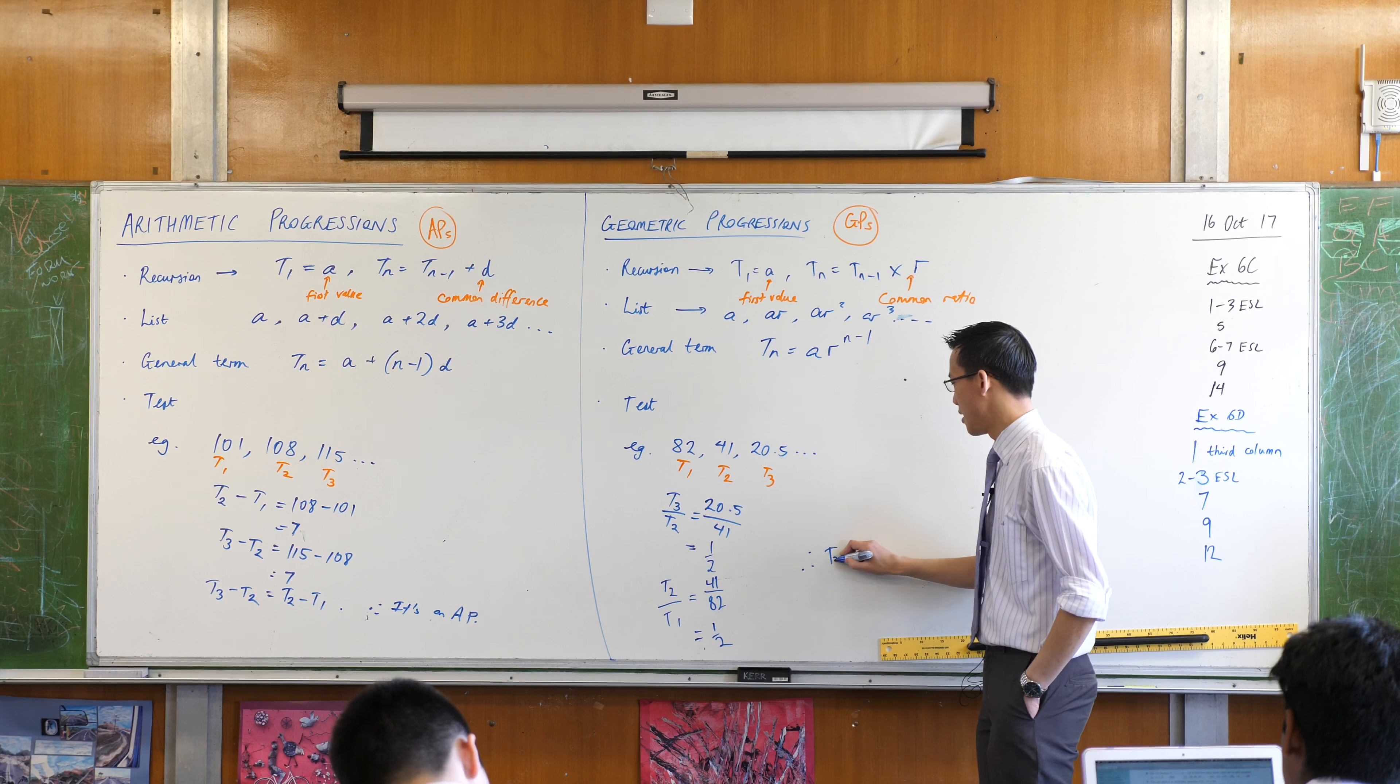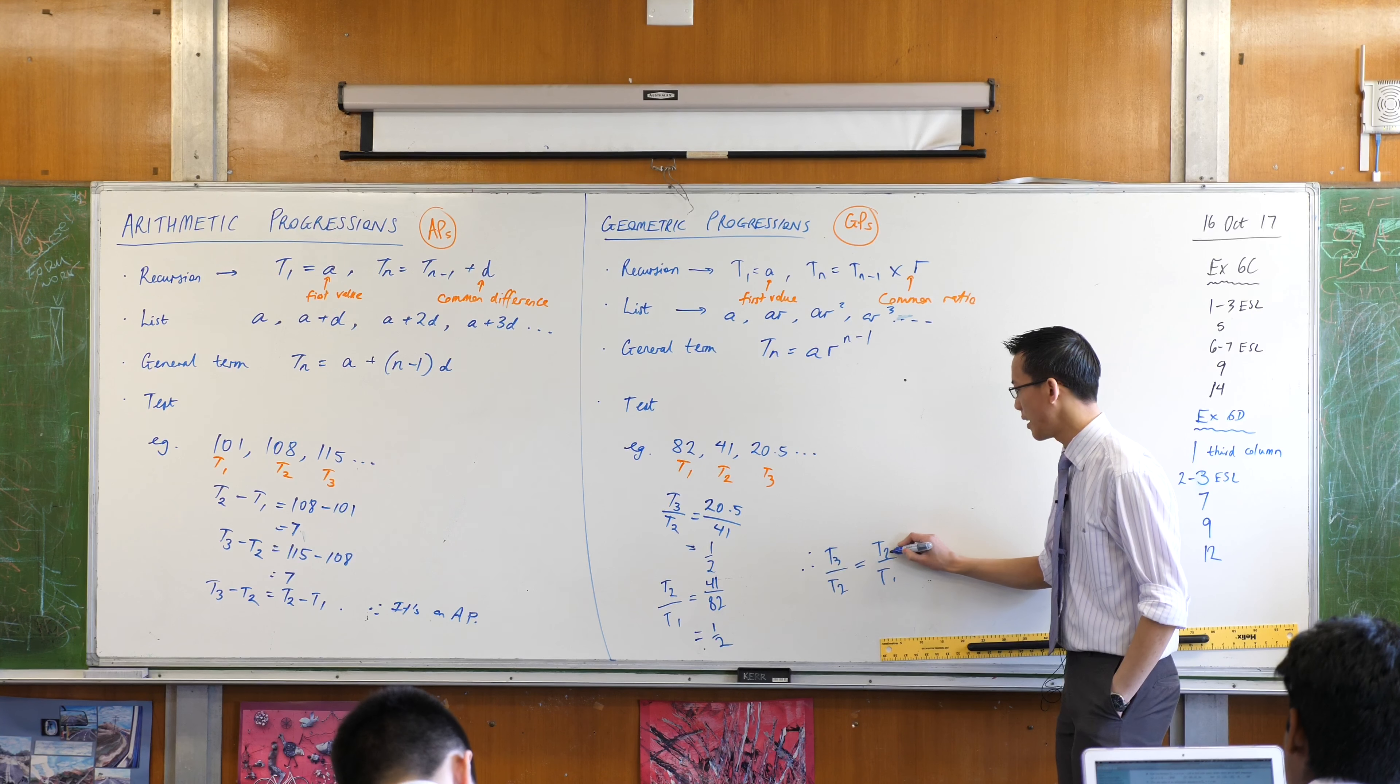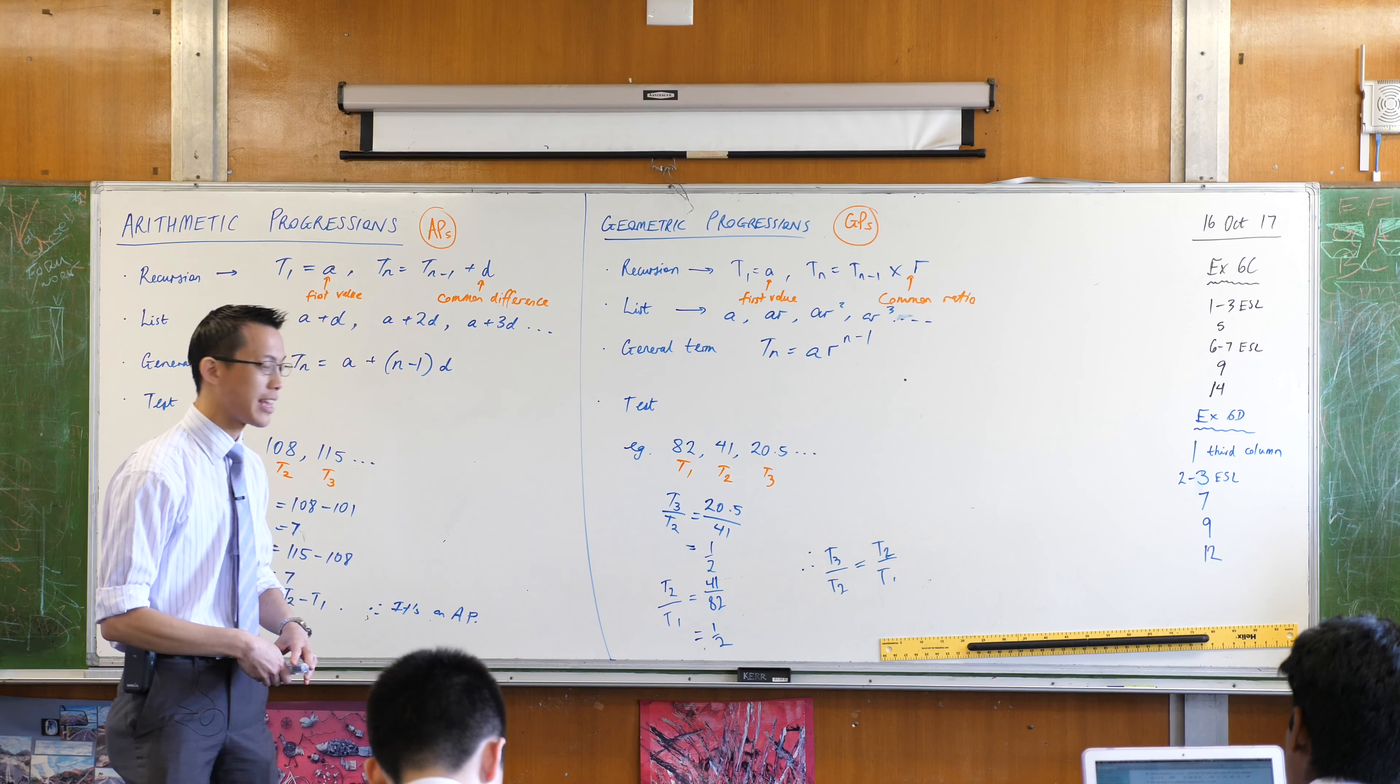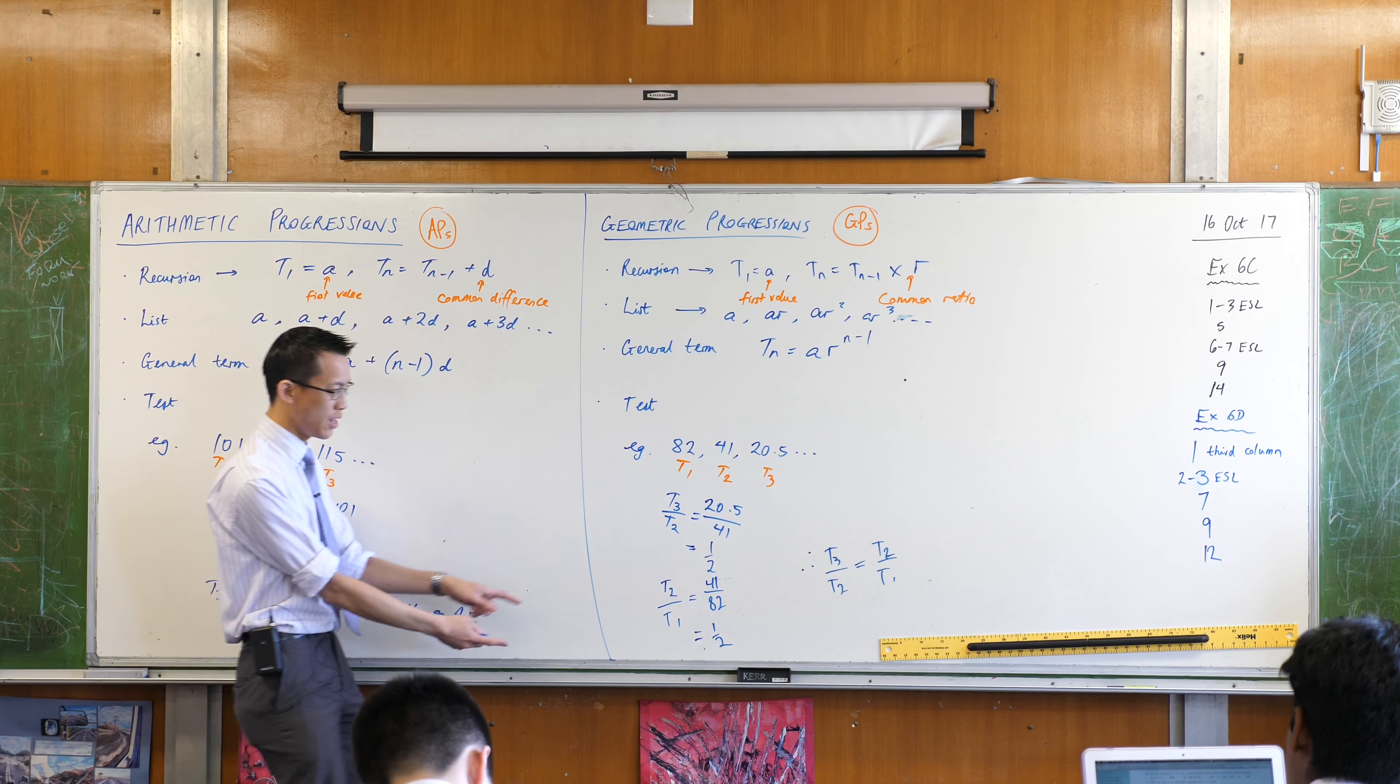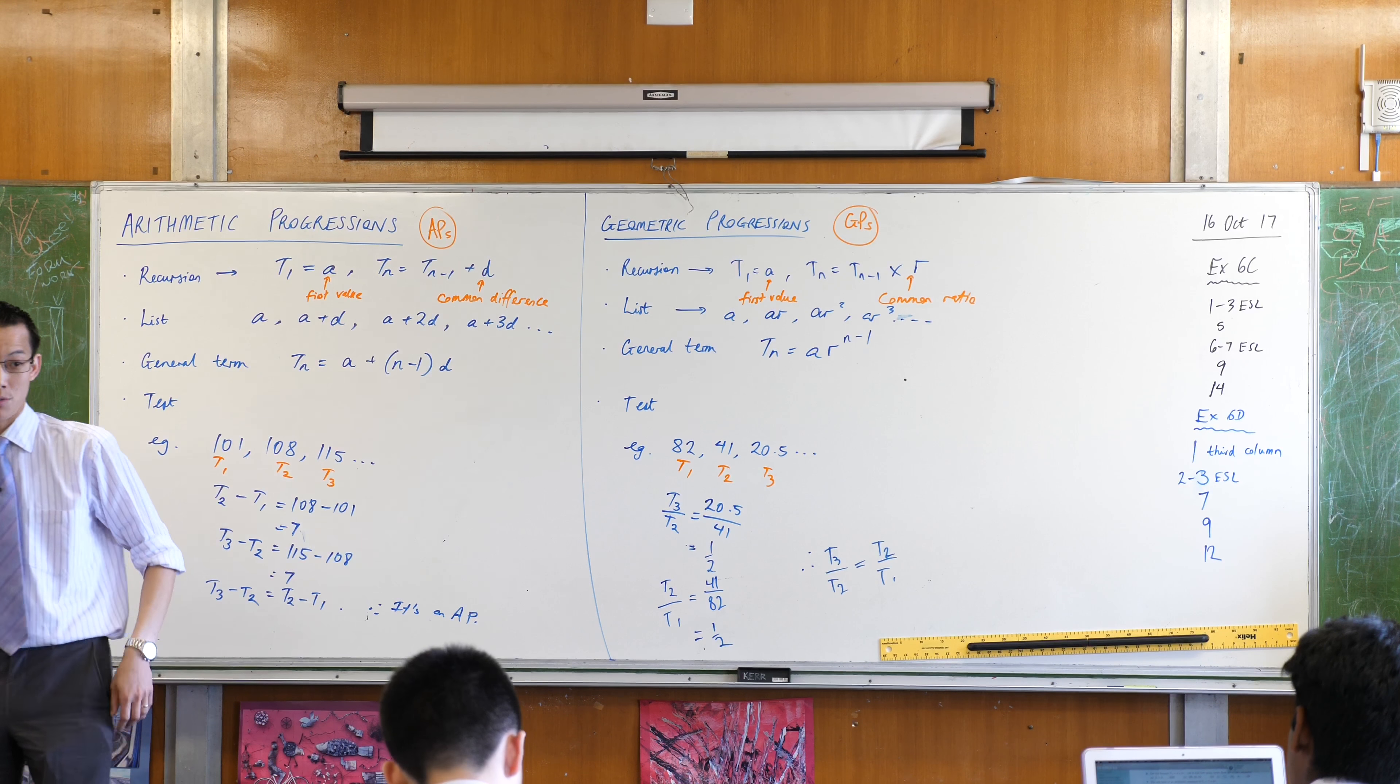So therefore the ratio that links the terms is the same. In other words, it's common. So if there is a common ratio, it's a GP. If there isn't a common ratio, if I find different values out of these two workings here, then it's not a GP, no problem, maybe it's something else.